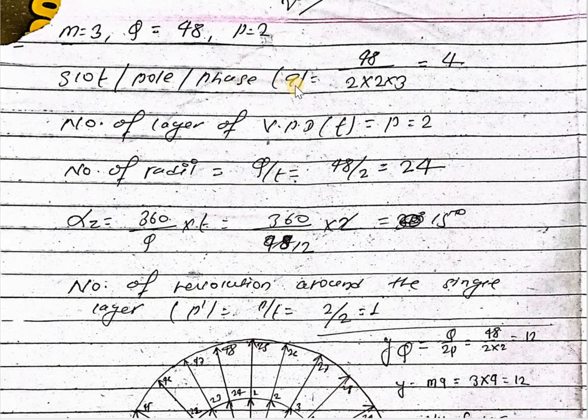So first of all you have to find the slot per pole per phase: q equals 48 upon 2 into 3 into 2, that is 4. And number of layers of voltage phasor diagram t equal to p equal to 2, this is the layer.